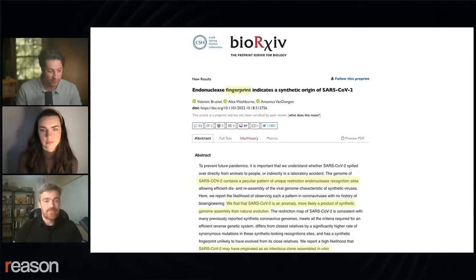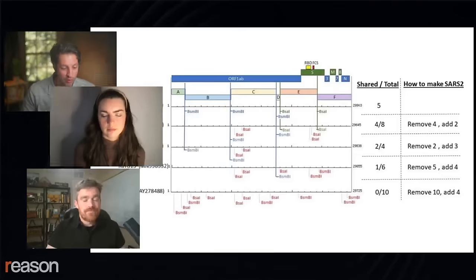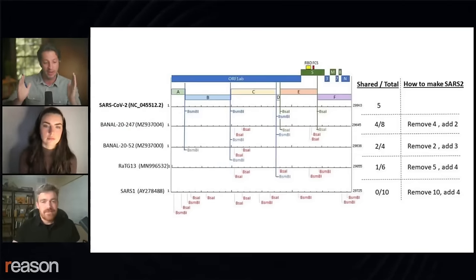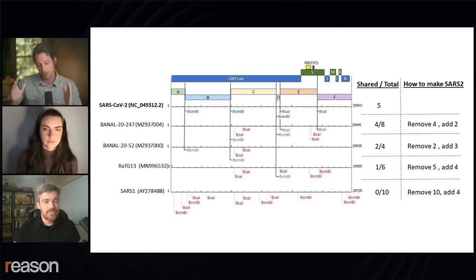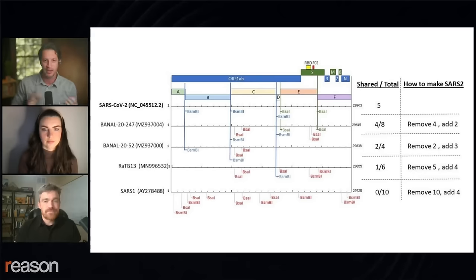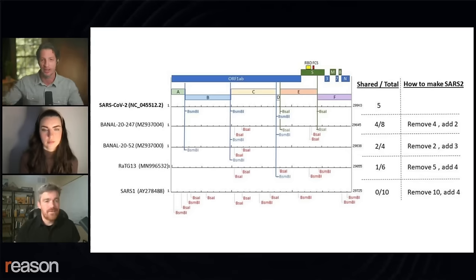The title of the paper is 'Endonuclease Fingerprint Indicates a Synthetic Origin of SARS-CoV-2.' The fingerprint refers to these rather evenly spaced, somewhat regularly sized segments — as opposed to a naturally occurring virus, where you would get much more variation in length, with some really short and some really long ones. It is mathematically highly improbable that this pattern would occur in nature.